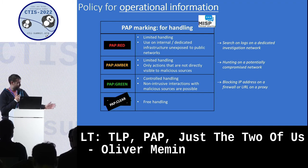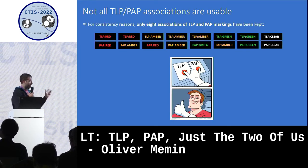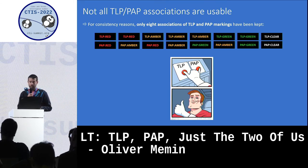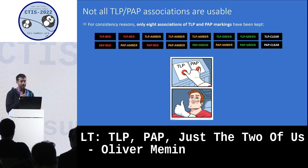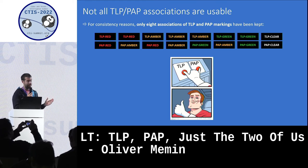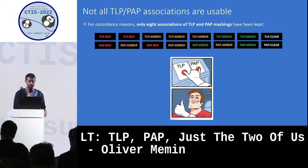And if you respect laws and licenses, with PIP clear, which is less restrictive. Not all TLP and PIP associations are usable — it would be nonsense to have a TLP red information with PIP clear. So here are the eight associations we keep in mind when we have to mark some information that we want to share with the community.